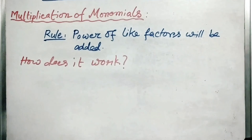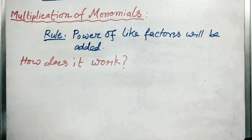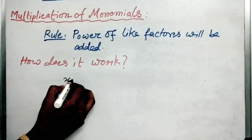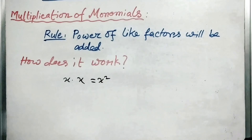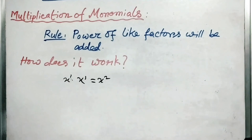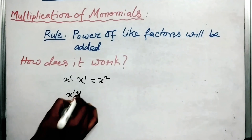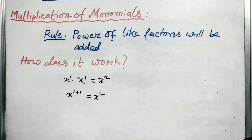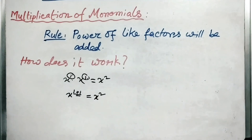Now the question may arise: how does it work? Suppose you are multiplying x with x — what will you write? Obviously x squared. Now, what is the power of x here? It is x to the power 1 and here it is x to the power 1. So x to the power 1 plus 1, that is x squared. The powers are added and the result is x squared.